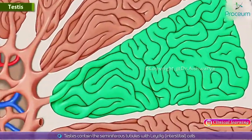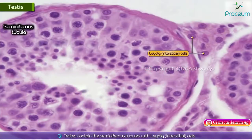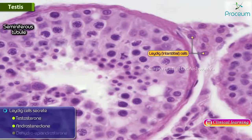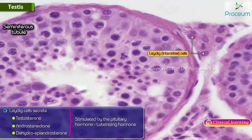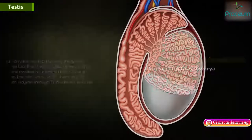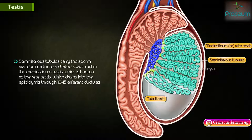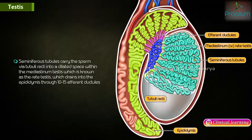The testes contain seminiferous tubules with Leydig interstitial cells. Leydig cells secrete testosterone, androstenedione, and dehydroepiandrosterone (DHEA) when stimulated by the pituitary hormone luteinizing hormone (LH). Seminiferous tubules carry sperm via tubuli recti into a dilated space within the mediastinum testis known as the rete testis, which drains into the epididymis through 10 to 15 efferent ductules.